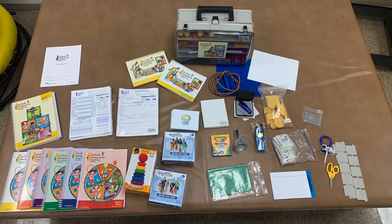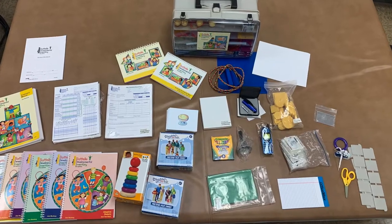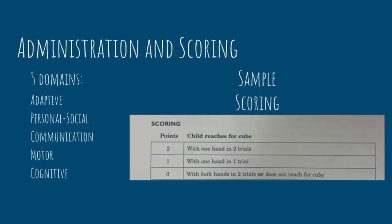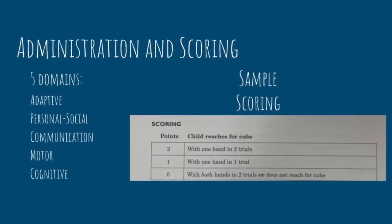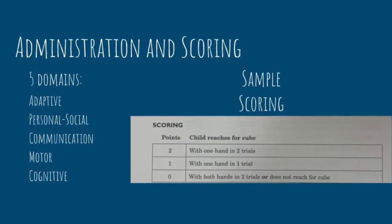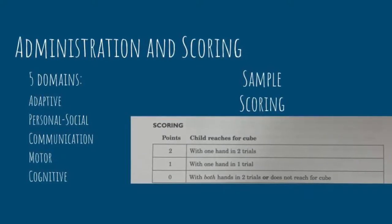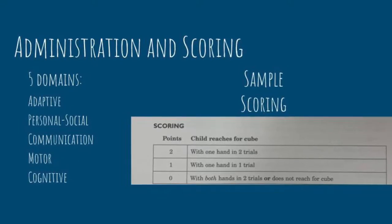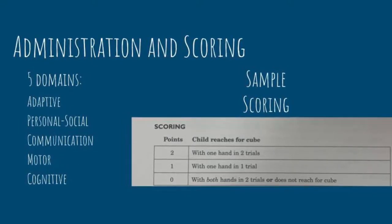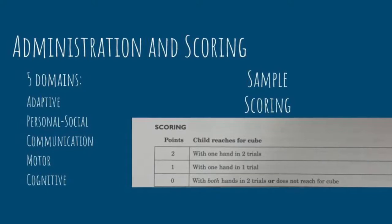These are the included materials for the Batelle Developmental Inventory. Each of the five domains can be assessed independently and individually, and the five domains can be tested in any order. This assessment is often administered as an interdisciplinary team, where different disciplines assess the domains typical to their practice area. For example, speech would assess the communication domain and OT/PT would assess the various physical domains.